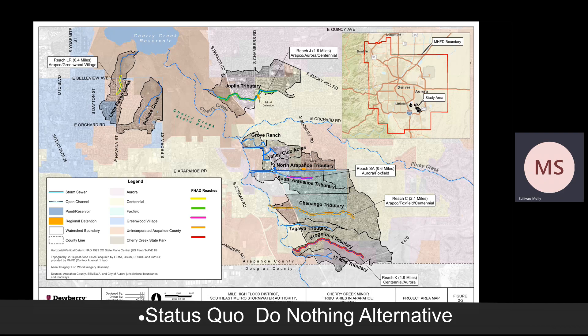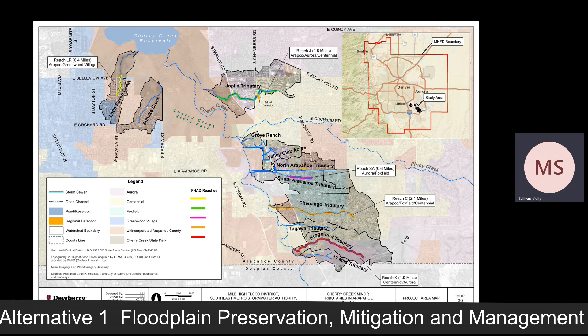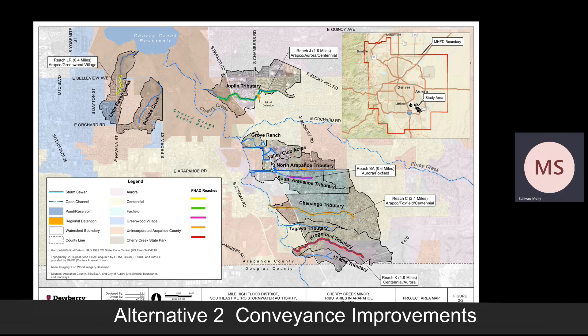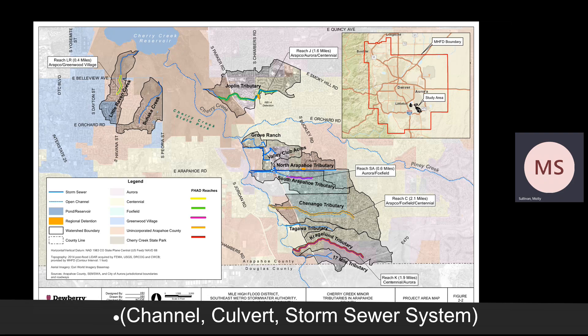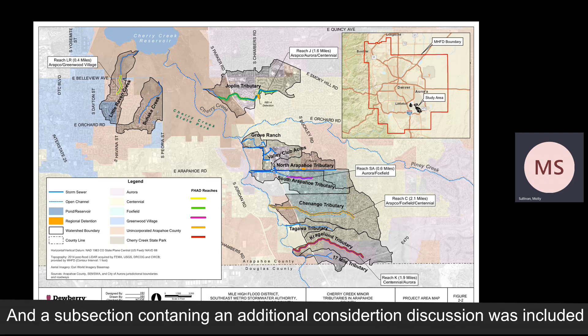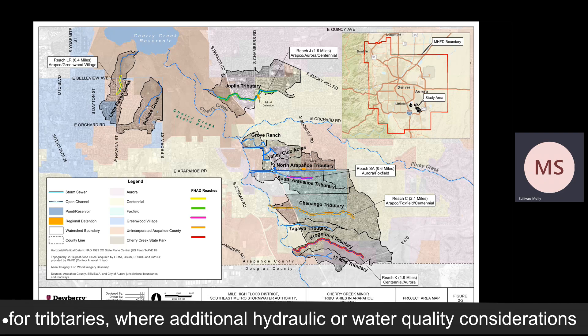The Status Quo or Do Nothing Alternative. Alternative 1 or the Floodplain Preservation, Mitigation, and Management Alternative. Alternative 2 or the Conveyance Improvements, including Channel, Culvert, and Storm Sewer System Capacity Improvements Alternative. A subsection containing an additional considerations discussion was included for tributaries where additional hydraulic or water quality considerations were identified.